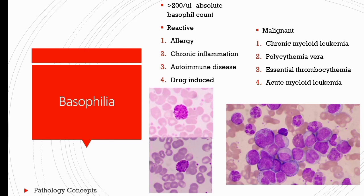If basophilia is associated with shift to left in the neutrophilic series, further investigations should be suggested — like FISH for BCR-ABL1 to rule out chronic myeloid leukemia. Any patient who has basophilia for more than 6 months should undergo diagnostic workup. First, rule out any drug reaction, systemic infection, or allergy. Then the patient should be evaluated for CML, AML, and other neoplasms like polycythemia vera, myelofibrosis, and essential thrombocythemia.